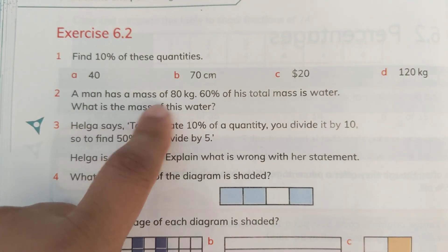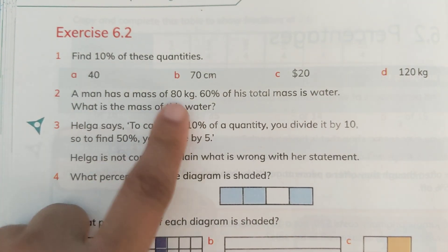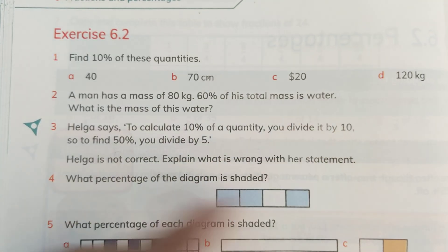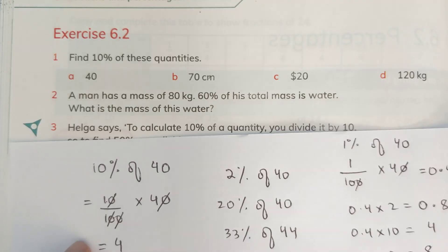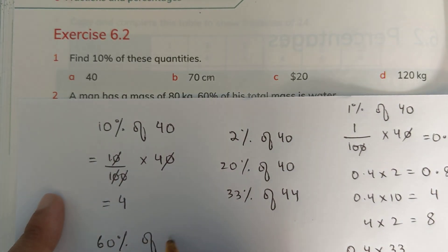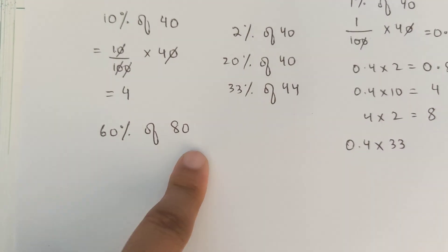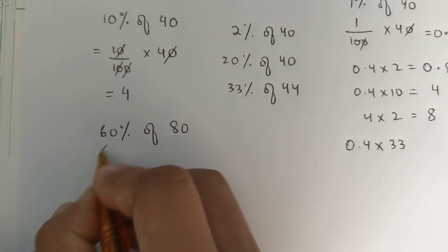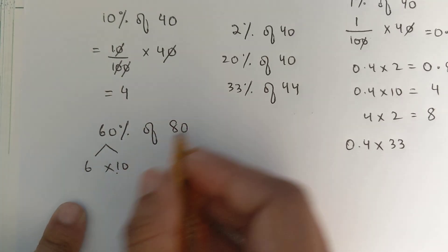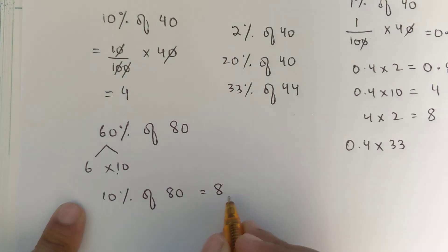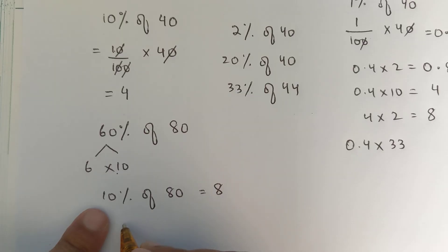Now, the next question says, a man has a mass of 80 kgs. This is the 100%, right? 60% of his total mass is water. So, what is the mass of this water? It would be 60% of 80. So, we can do it like this. If we will find the 10% of 80, 60% can be split into 6 multiplied by 10, right? So, you can do it like this. 10% of 80 is equals to 8. 80 divided by 10 is equals to 8. And then, what are we left with? 6. So, we will simply multiply 6 with 8 and that's 48.